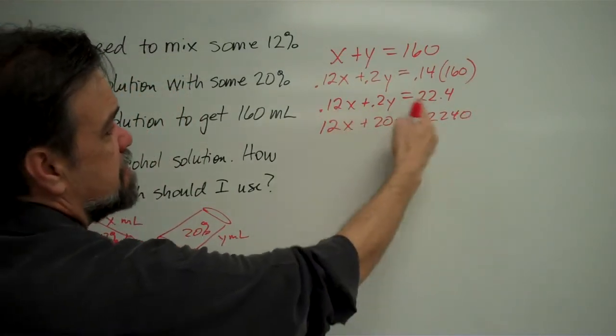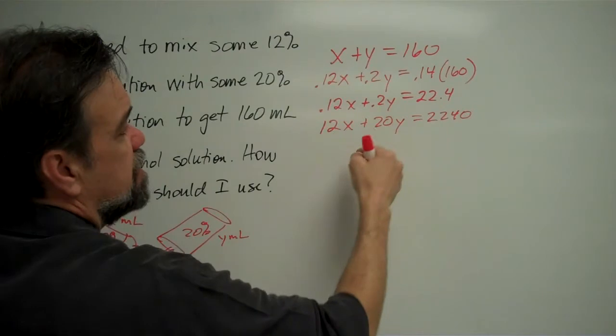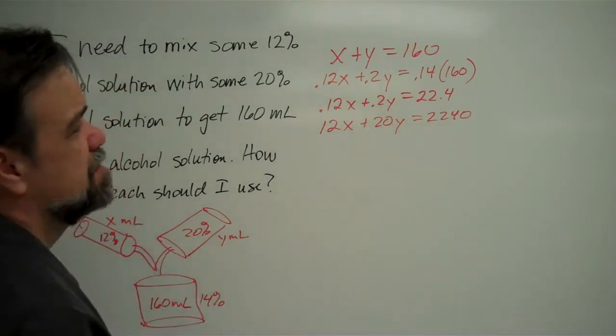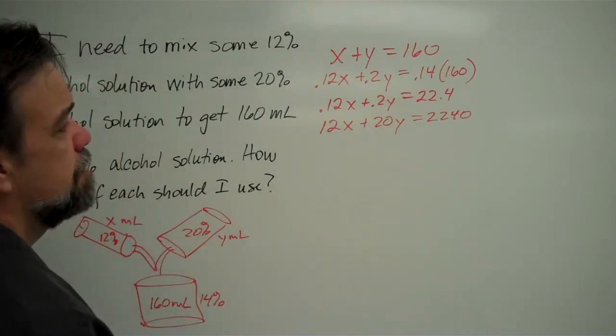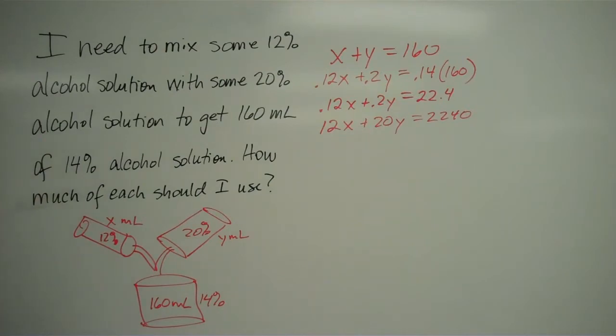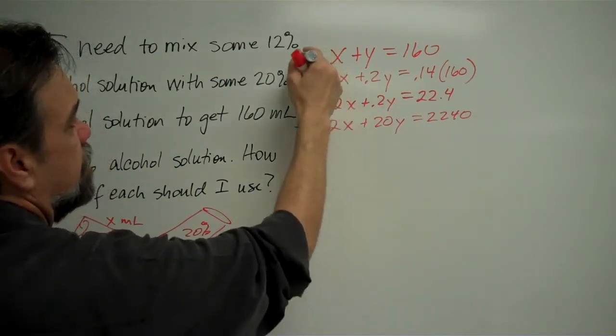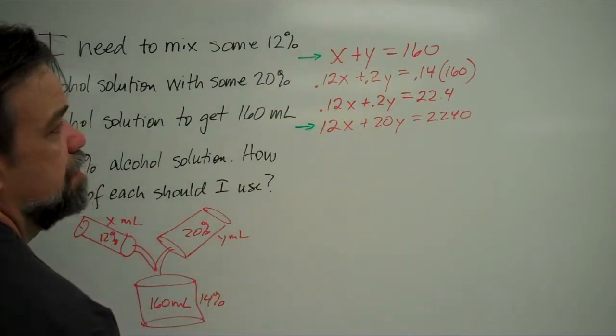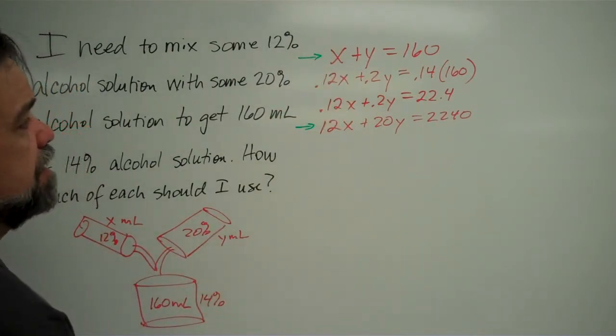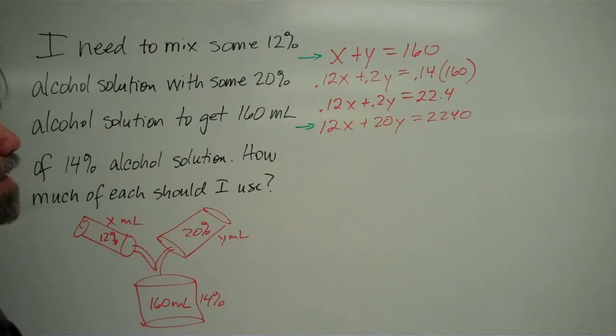So basically what I've done is, I've kept the same relationship here, I've kept the same equation, but now I don't have those decimals that are going to mess me up. So, we are now looking at this equation and this equation. Those are the two equations that we have that we need to combine. And the best method to use here would be elimination.